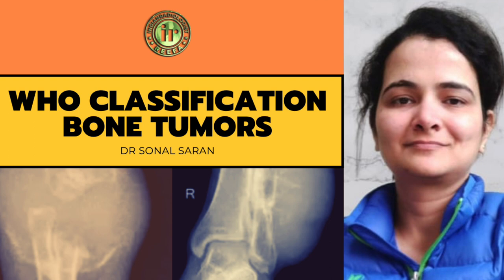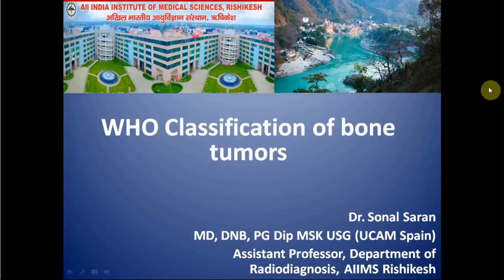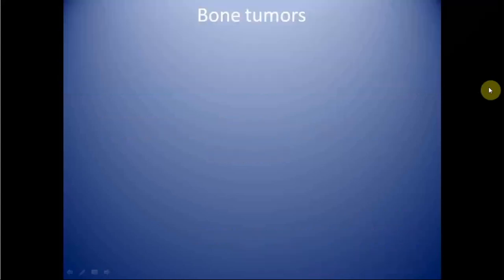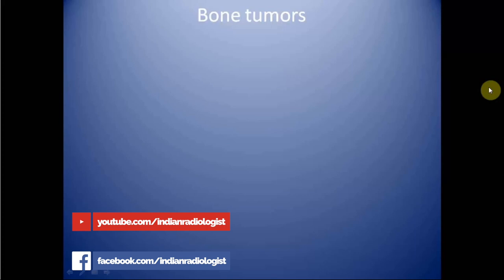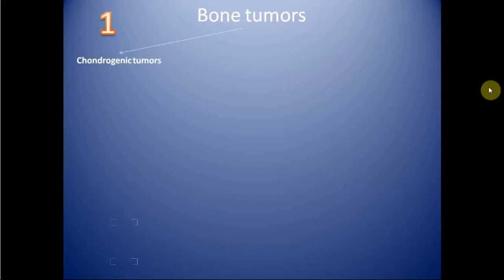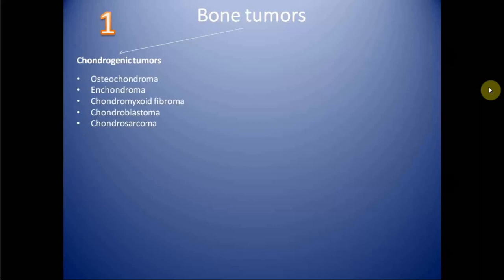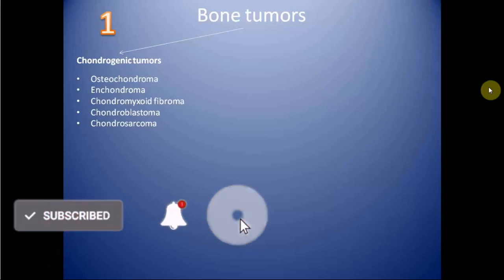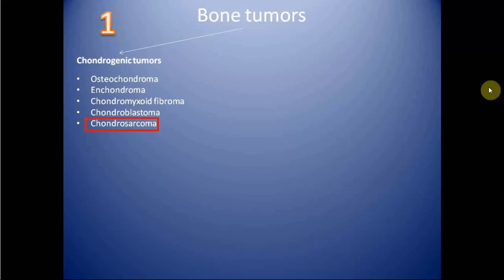Welcome back. In this video we will be discussing the WHO classification of bone tumors. Bone tumors are classified into multiple categories and we will be discussing each category one by one. The first category includes chondrogenic tumors, which are characterized by formation of cartilaginous matrix. Chondrogenic tumors include osteochondroma, chondroma, chondromyxoid fibroma, chondroblastoma, and chondrosarcoma. Except for chondrosarcoma, which is malignant, the rest are benign.